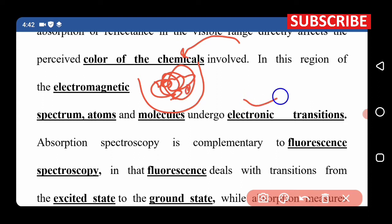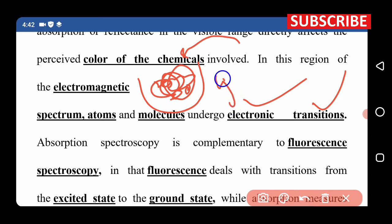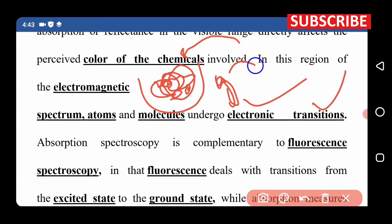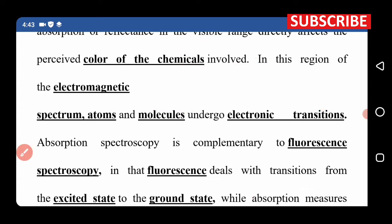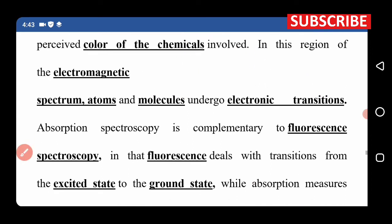When atoms are in the ground state, electrons can undergo transitions. The ground state and transition state will be studied in chemistry. For example, I will give you an example here.